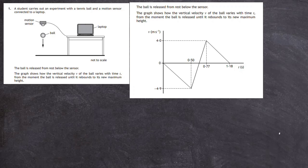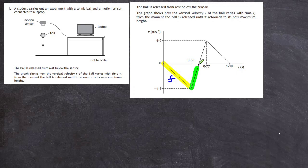It's good to know which parts of the graph match up with what's happening to the ball. This part of the graph here: the ball starts at rest (velocity 0) and as its velocity increases in a downward direction, this must be where the ball is actually falling. The gradient of that line gives you the acceleration of the ball moving downwards. We can see that at a time of 0.5 seconds the ball had a velocity of minus 4.9, meaning a speed of 4.9 m/s downwards.